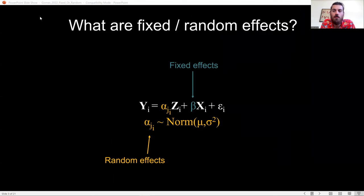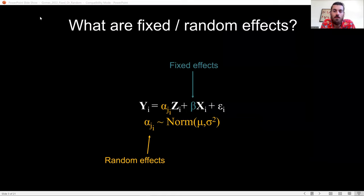One choice we face with mixed models is whether we fit variables as fixed effects or random effects. A fixed effect is the m in y equals mx plus b, or beta coefficients in statistical models.